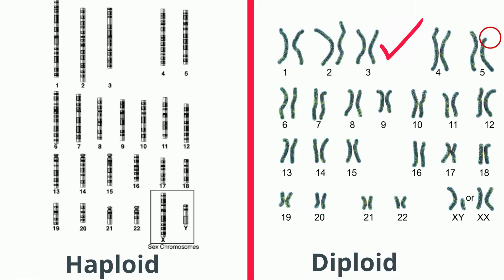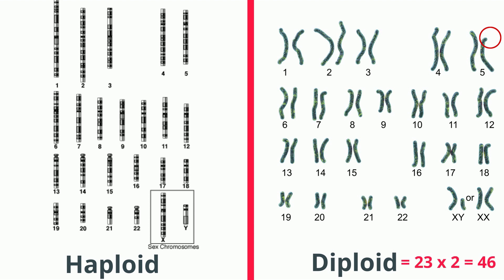Diploid cells have paired chromosomes and are represented with two N. The N stands for the number of chromosomes. Notice in humans there are 23 pairs of chromosomes, or 46 chromosomes total in each diploid cell.